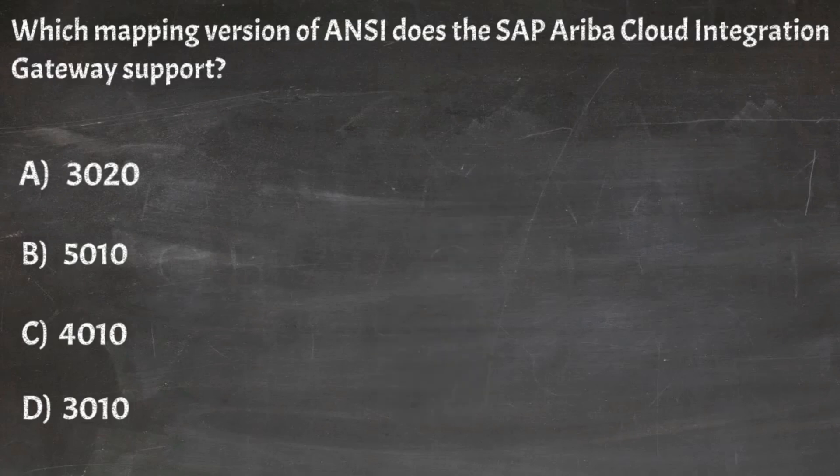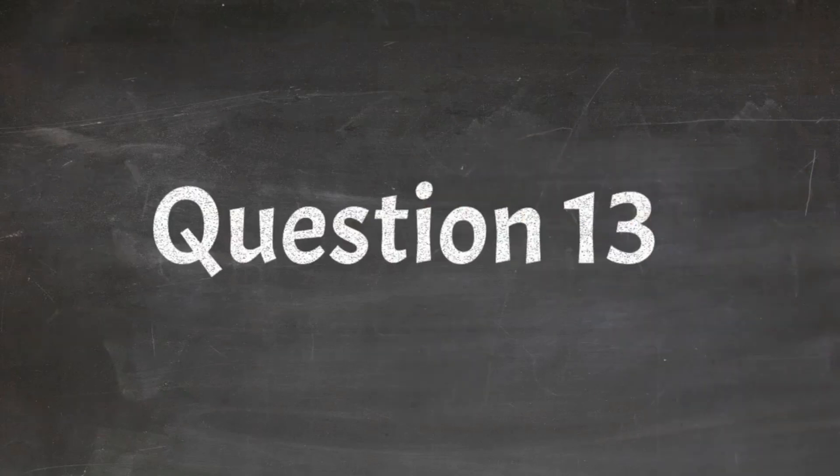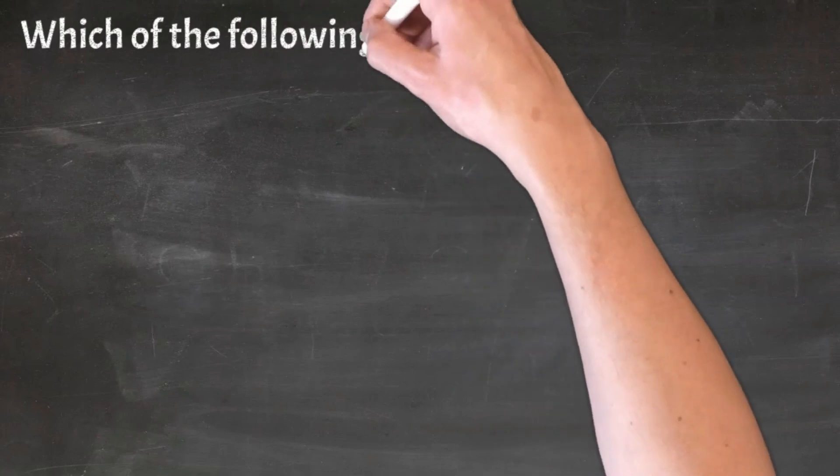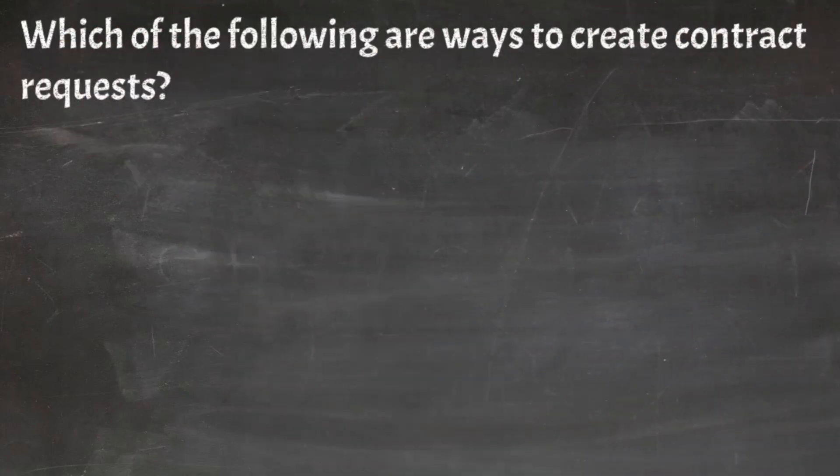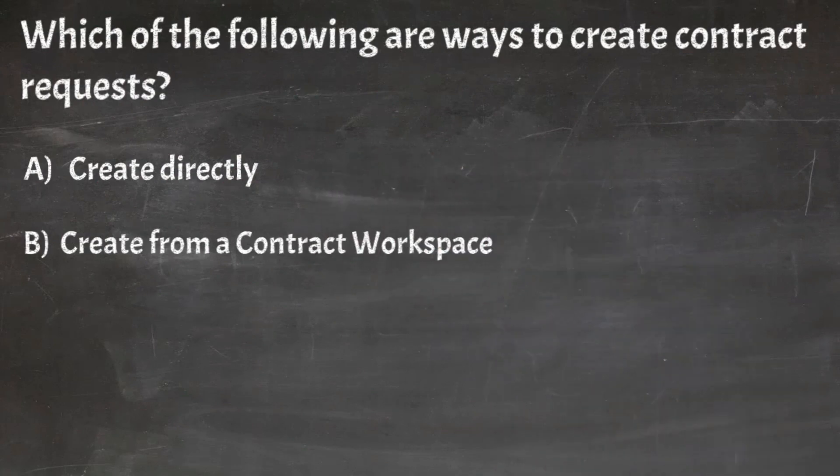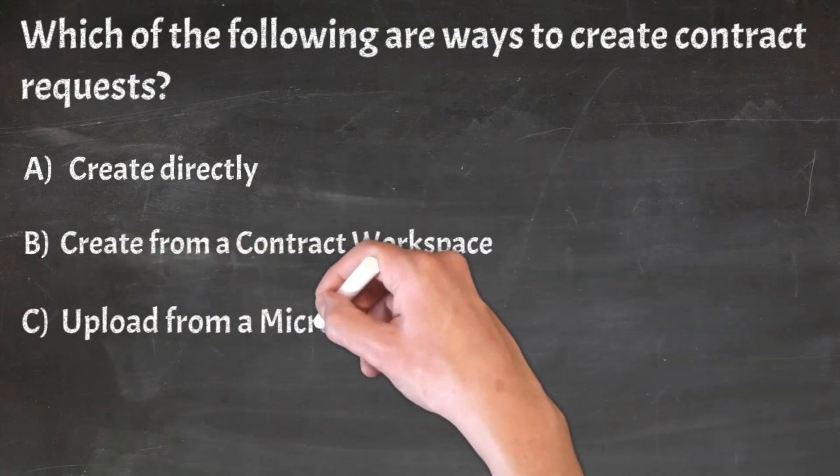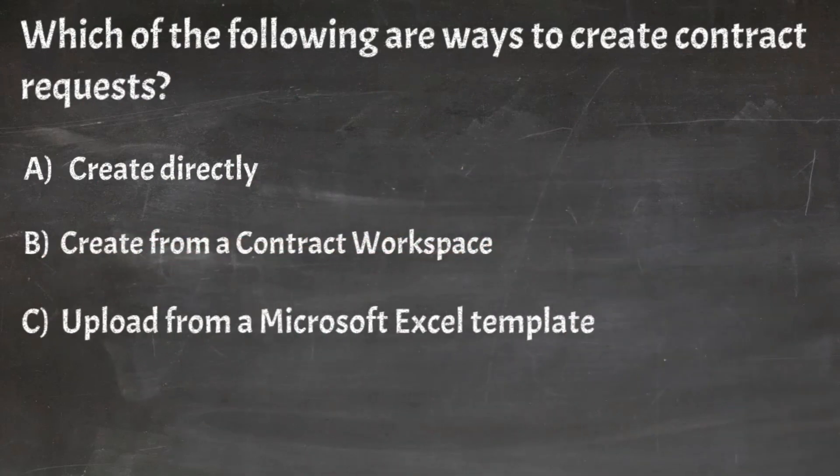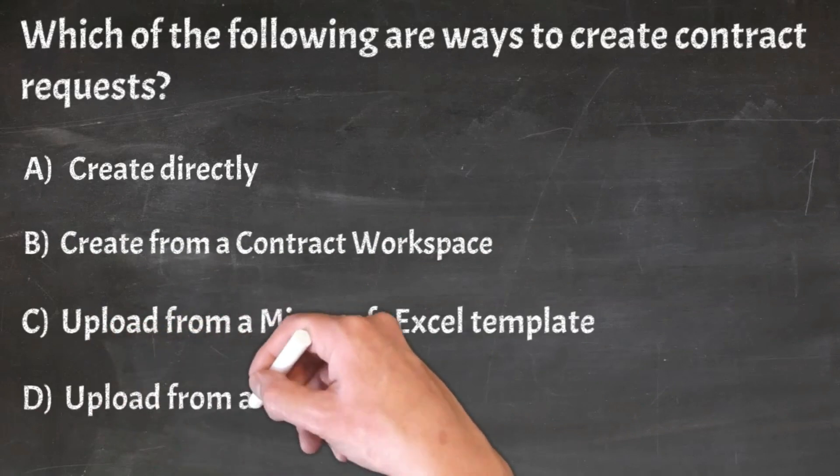Correct answer: C. 4010. Question 13: Which of the following are ways to create contract requests? A. Create directly, B. Create from a contract workspace, C. Upload from a Microsoft Excel template, D. Upload from a PDF.